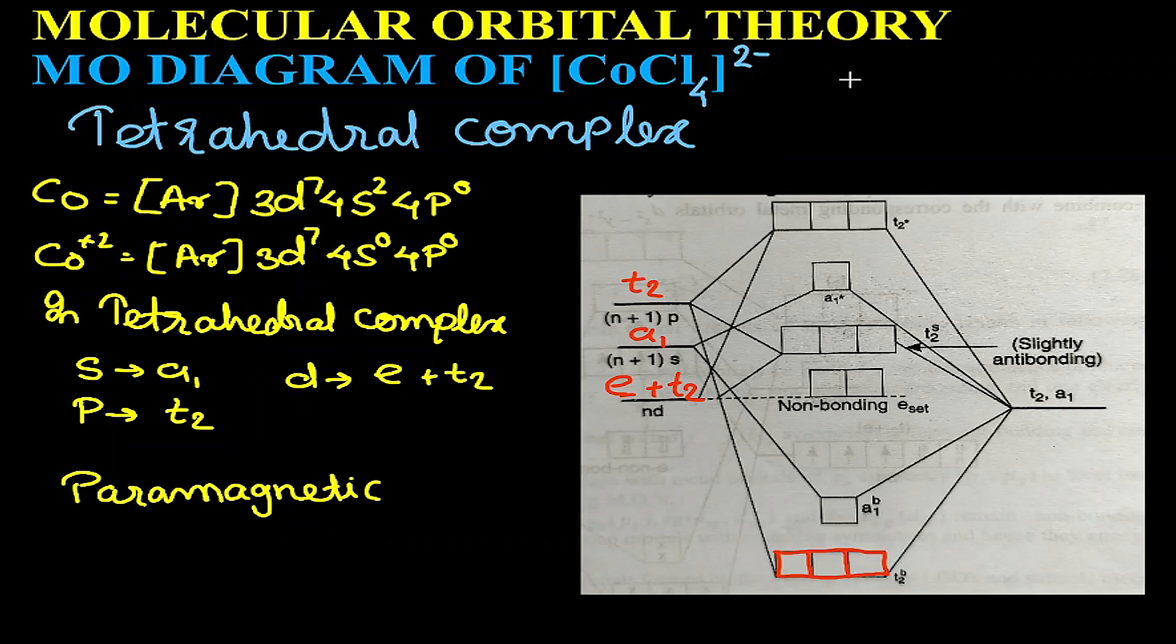Today under molecular orbital theory we will be looking at a molecular orbital diagram of CoCl4 2-. This is an example of a tetrahedral complex.